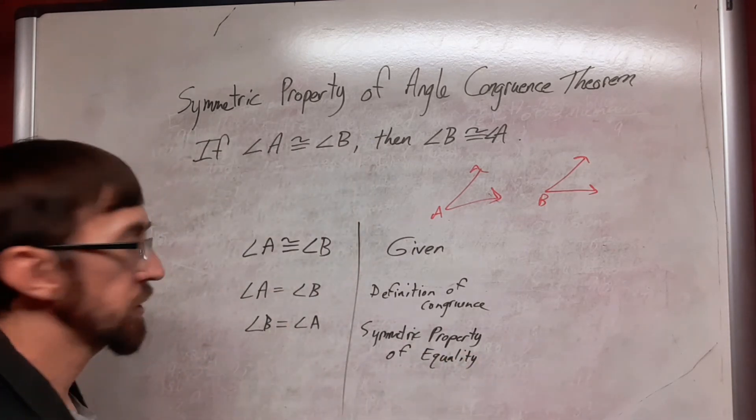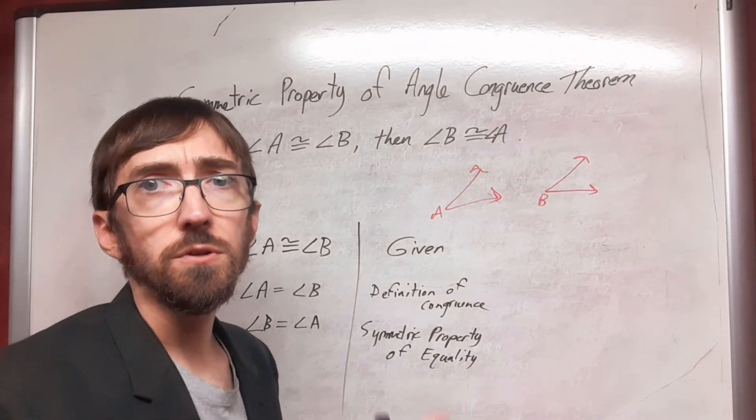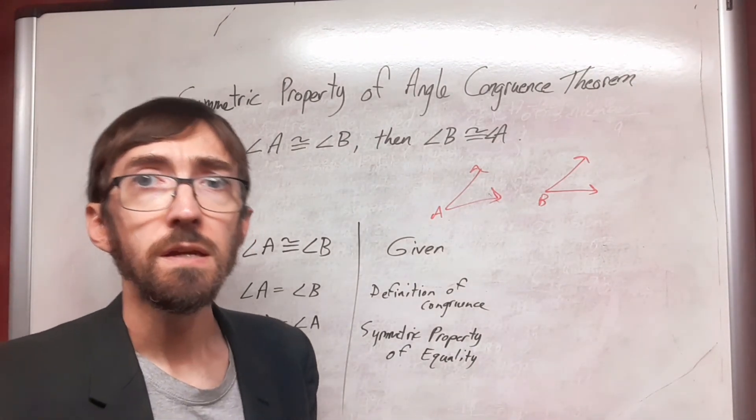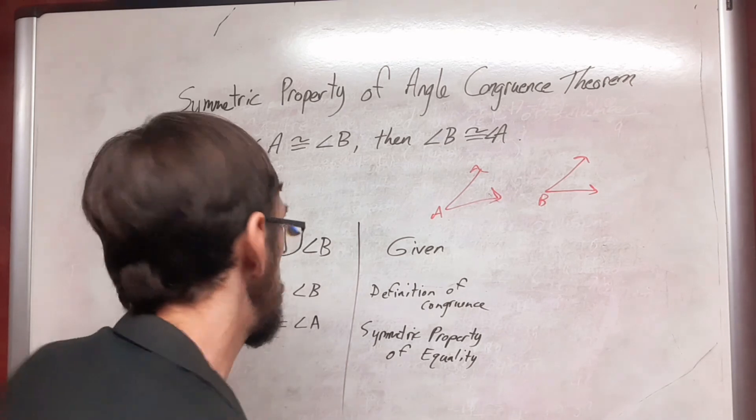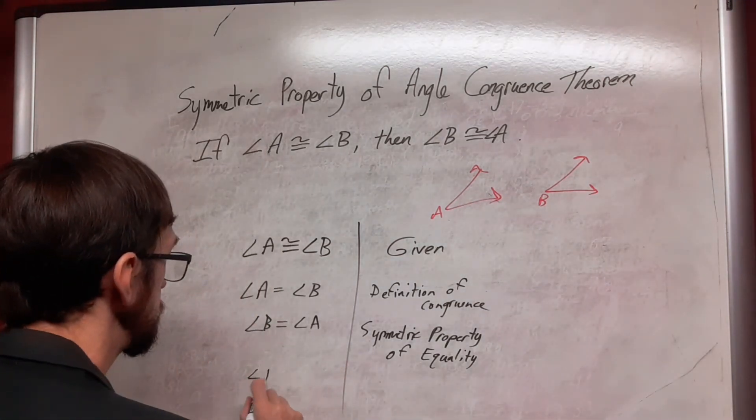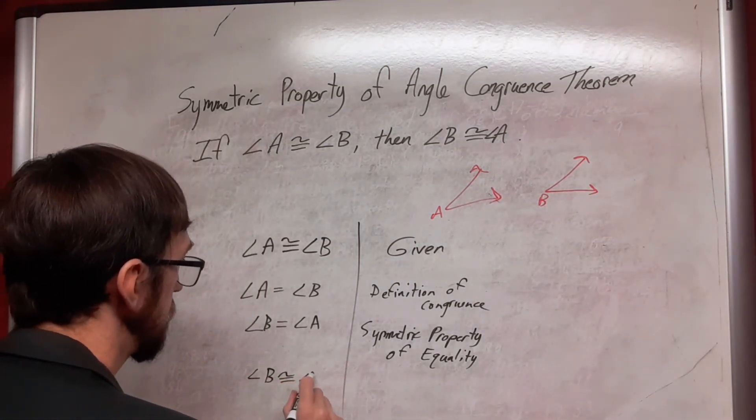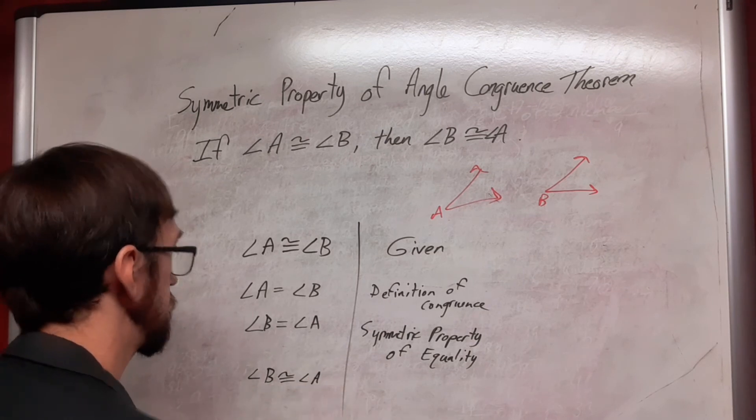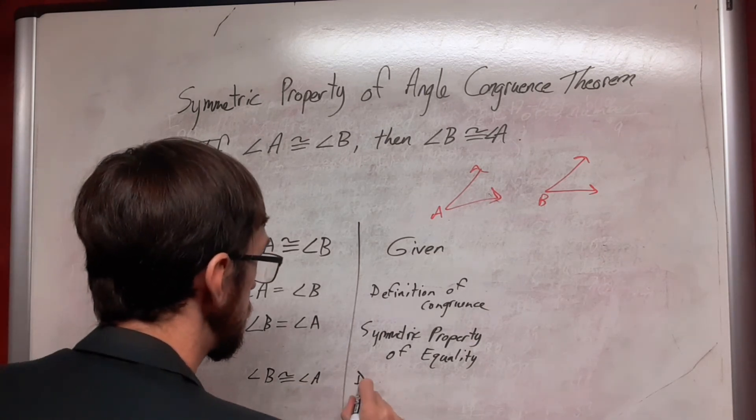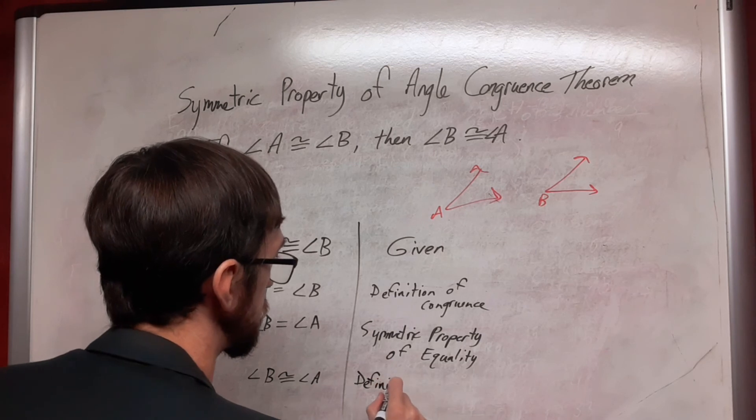And now I have two geometric objects that are equal to each other, but they're occupying different places in space. And that is the definition of congruence. So we have that angle B is congruent to angle A, again, by definition of congruence.